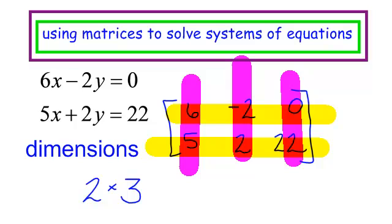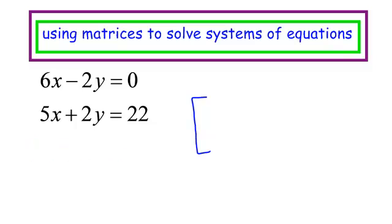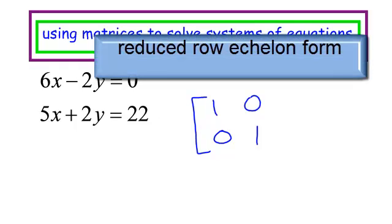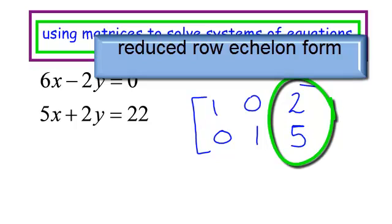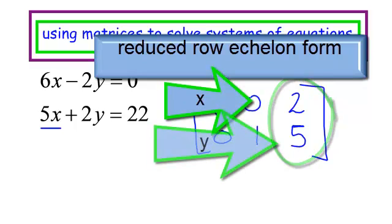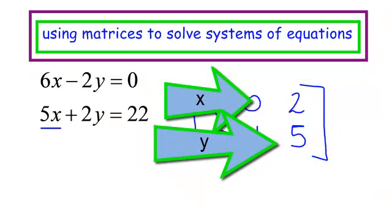In order to solve the systems of equations, I need to tell my calculator what my matrix is. Then I have to tell my calculator to put it in reduced row echelon form. For it to be in reduced row echelon form, I have to have 1, 0 and 0, 1, and then my answers would be over here. Let's just pretend the answers are 2, 5 — if my x's were lined up first, my ordered pair would be 2, 5.